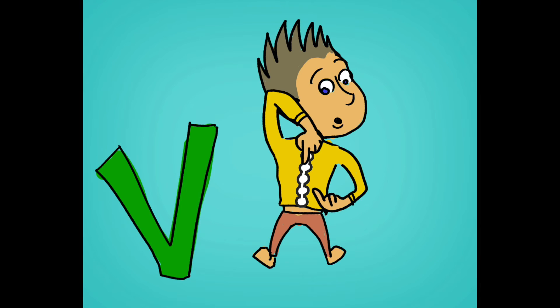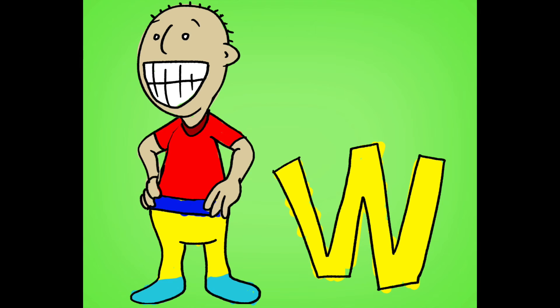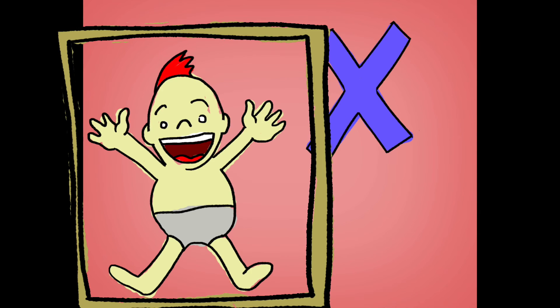V is for vertebrae, v v, vertebrae. W is for waist, w w, waist. X is for x-ray, x-ray of your bones.